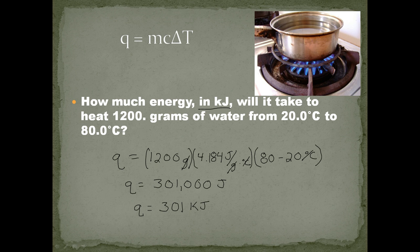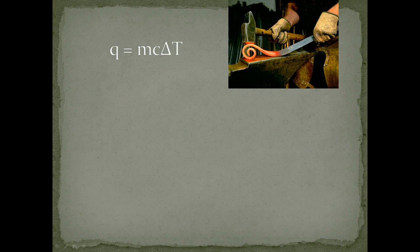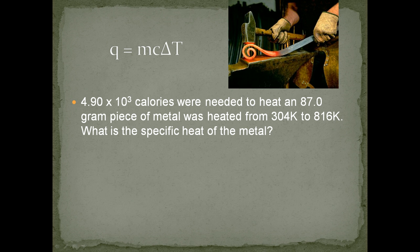Our next question gives us 4.9 times 10 to the third calories, which we recognize as an energy or q. We've got a mass of 87 grams, it's a piece of metal, and we know the temperature change. We're looking for the specific heat.